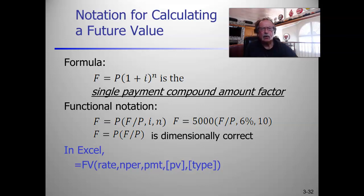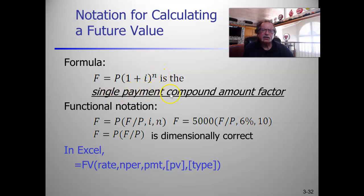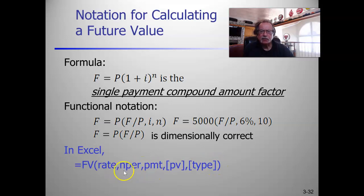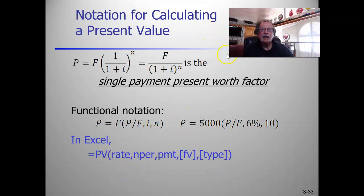The takeaway from this slide is that the formula F equals P times (1 plus i) to the N is the fundamental engineering economics and financial engineering formula. It's called the single payment compound amount factor. I'll show you this in Excel with an example later in this lesson. The inverse of that is called the single payment present worth factor.